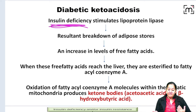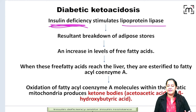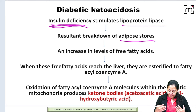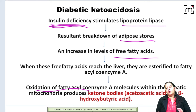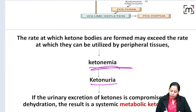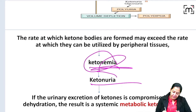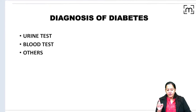In diabetic ketoacidosis, which occurs mainly in Type 1 diabetes due to complete insulin deficiency, an enzyme called lipoprotein lipase is stimulated. This causes the breakdown of adipose tissue into free fatty acids. The free fatty acids are oxidized to form ketone bodies, which first accumulate in the blood (ketonemia) and then appear in the urine (ketonuria).